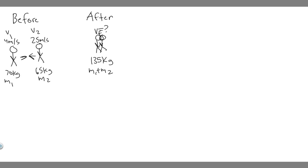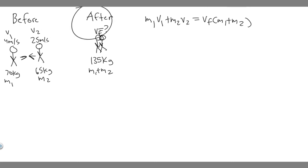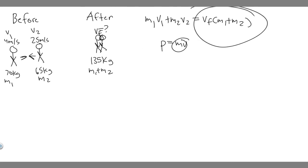This collision is what we call a perfectly inelastic collision — two objects collide and become one unit. To solve it, we use the formula: M1·V1 + M2·V2 = V_final × (M1 + M2). This comes from the law of conservation of momentum: momentum before equals momentum after, since P = MV.